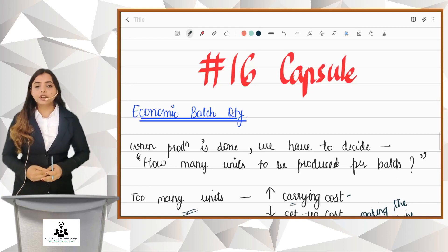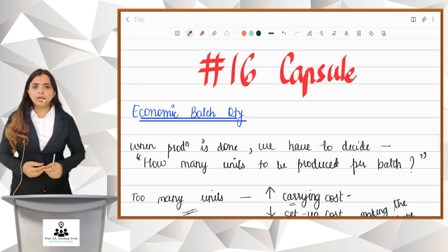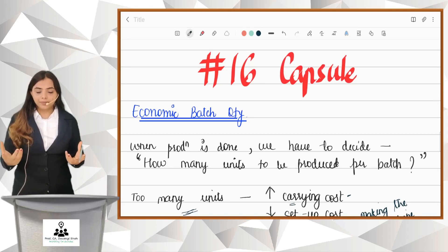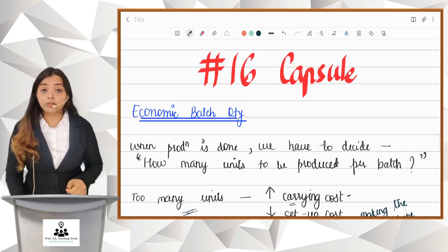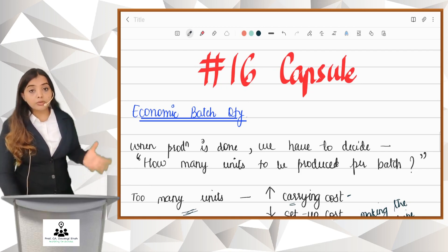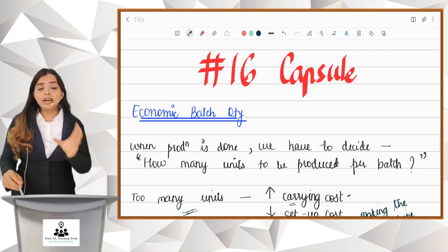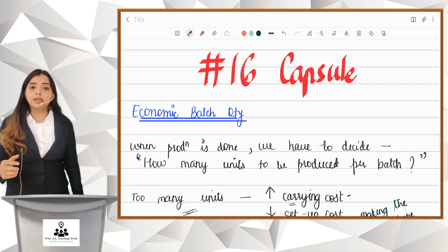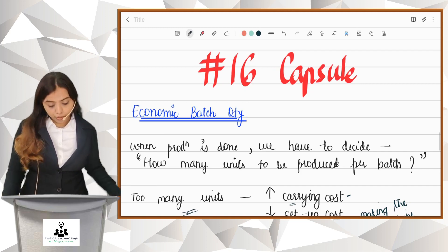Capsule 16 is for Economic Batch Quantity. I just told you what batch costing is - batch costing means production is to be done in lots. Now when it comes to lots, we should produce 100 units at a time, or 1000 units, or 500 units - exactly how much? So there has to be a decision making as to how many units should be produced per batch.